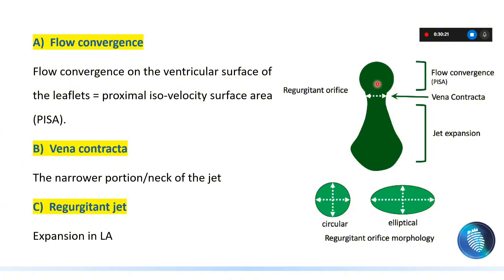Any regurgitant flow will have these three components: the PISA or proximal iso-velocity surface area, also called the flow convergence zone; then the narrowest neck across which the flow passes through the regurgitant orifice, which is the vena contracta; and lastly the expansion into the left atrium, called the jet expansion or body of the jet.